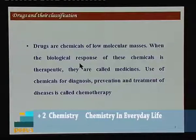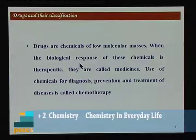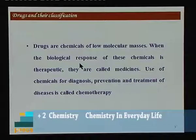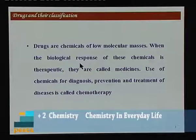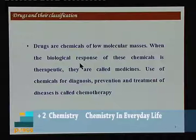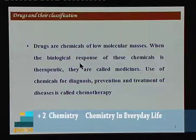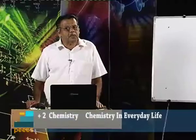Drugs are chemicals of low molecular masses. When the biological response of these chemicals is therapeutic, they are called medicines. Use of chemicals for diagnosis, prevention, and treatment of diseases is called chemotherapy. A large number of medicines are used for treatment of various diseases, and these medicines can be used only under the prescription of a medical practitioner. Excessive use should be avoided because many of them are poisonous.